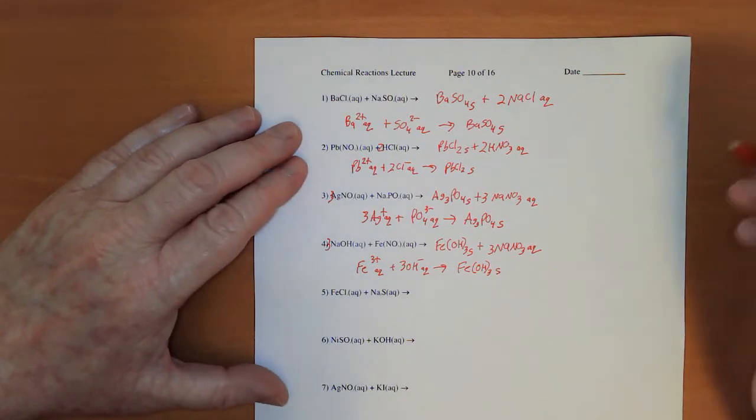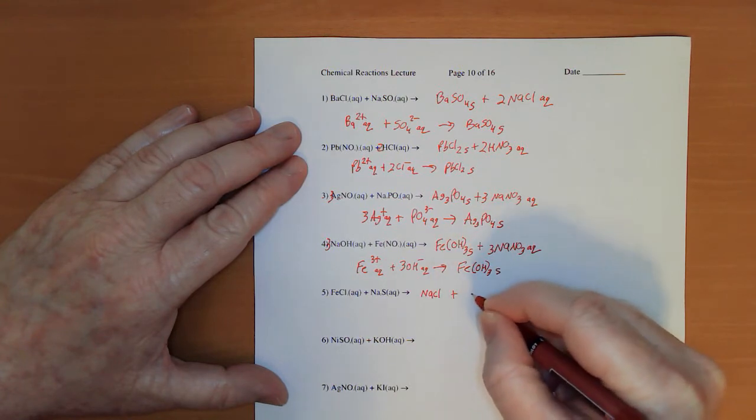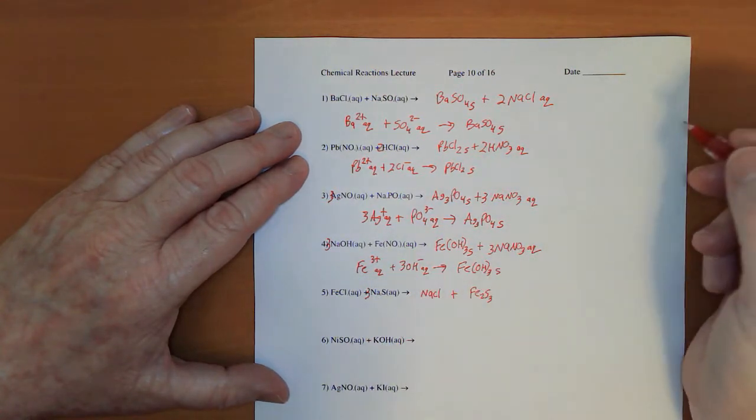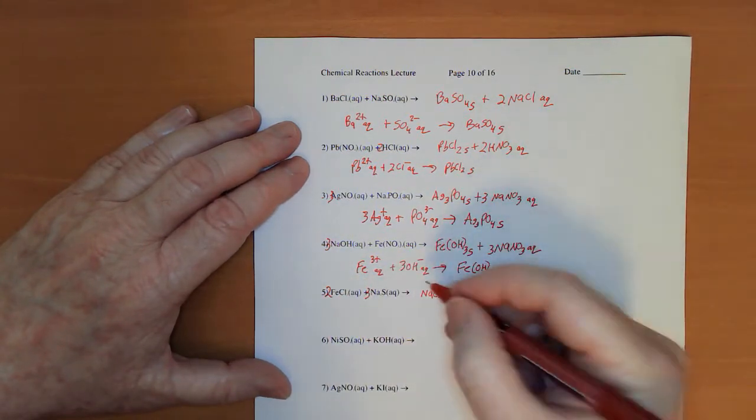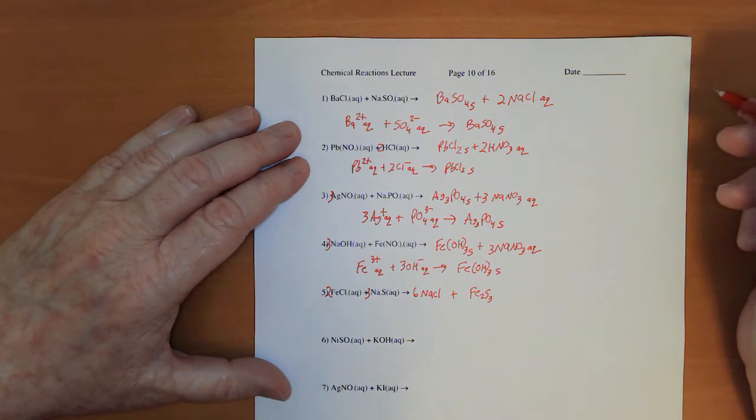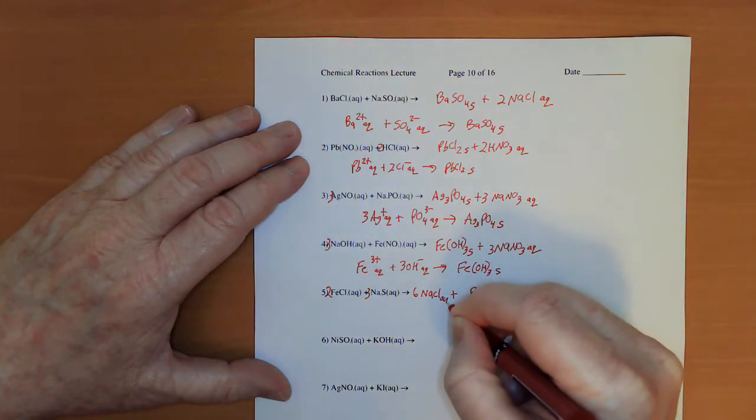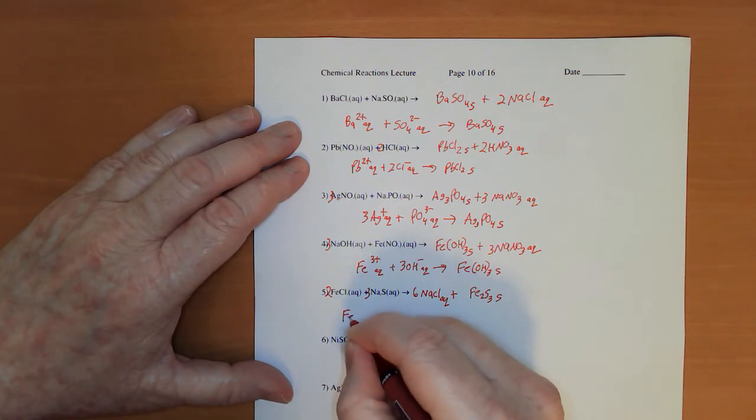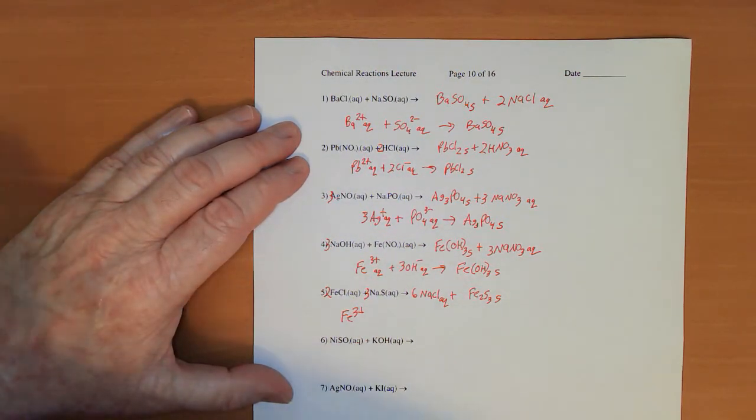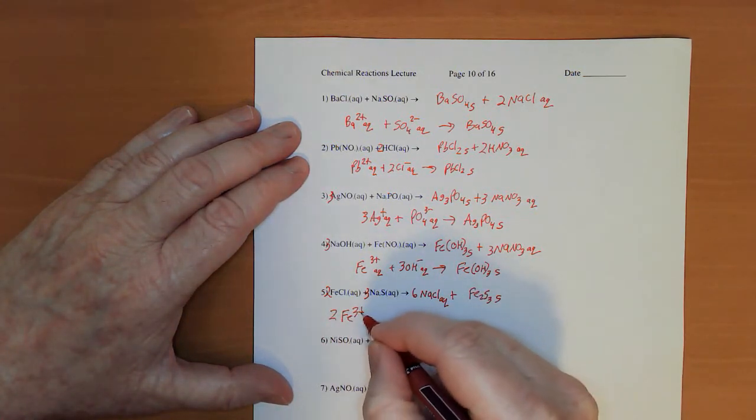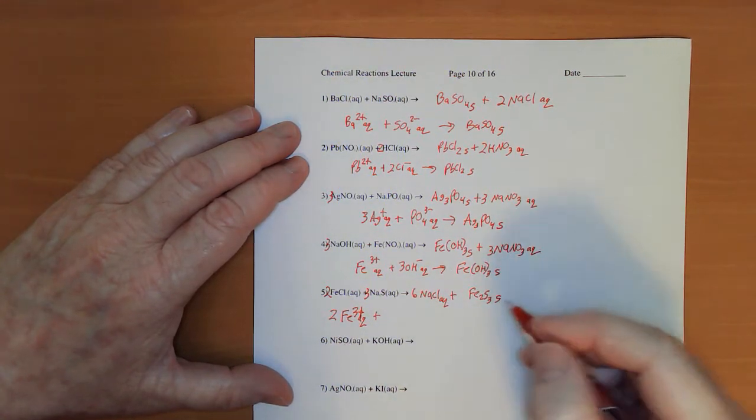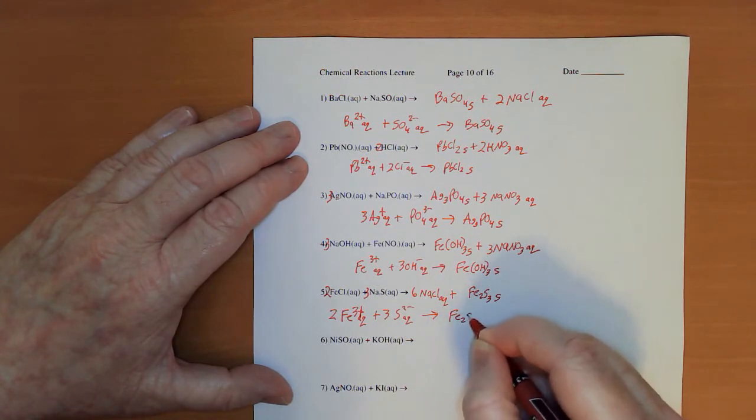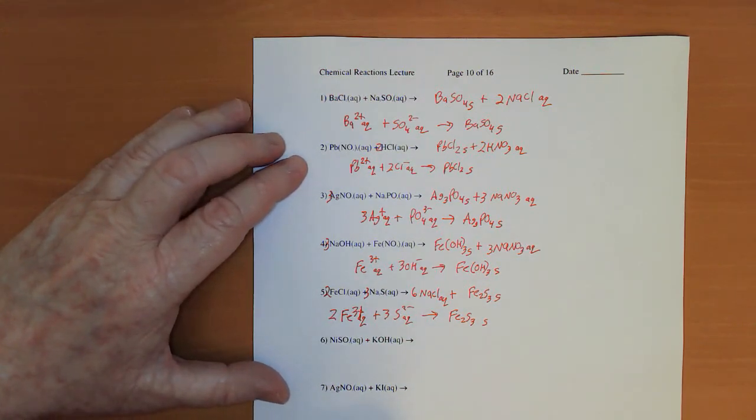In the next one we're getting a little trickier with the ratios. I have NaCl plus Fe2S3, so I'm going to need to put a three here and a two there. That means I'm actually going to end up with a six there. Group one sodium, that means this is aqueous. Iron with sulfide, no, that's going to be a solid. So Fe3+, there's going to be two of those based on my balancing, and then for the sulfide S2- there's going to be three of them aqueous to give me Fe2S3 solid.